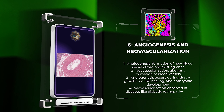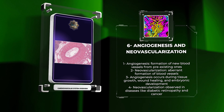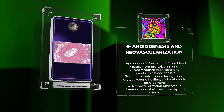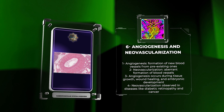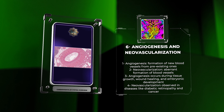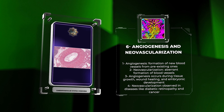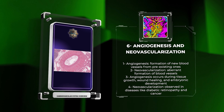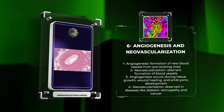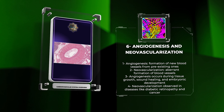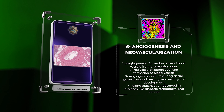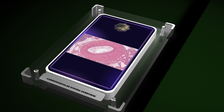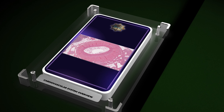Angiogenesis and neovascularization are physiological processes that involve the formation of new blood vessels from pre-existing ones. Angiogenesis occurs during tissue growth, wound healing, and embryonic development. Neovascularization refers to an aberrant formation of blood vessels, often observed in diseases such as diabetic retinopathy and cancer. Both processes are tightly regulated by various growth factors, cytokines, and extracellular matrix components.